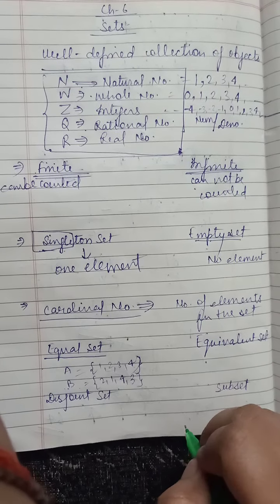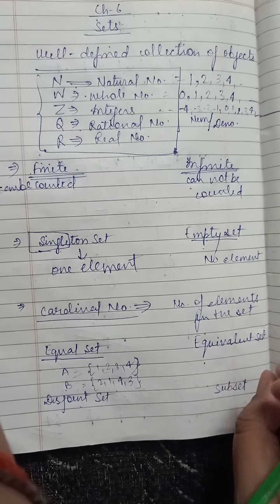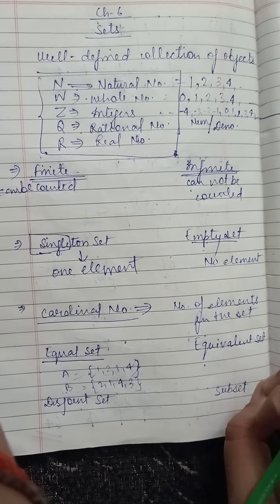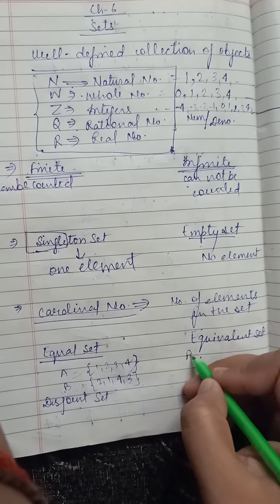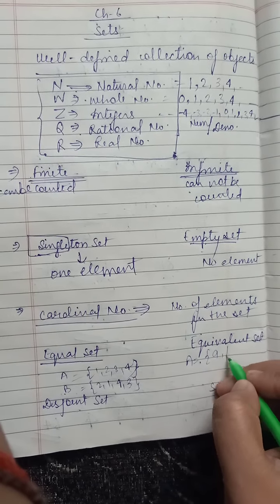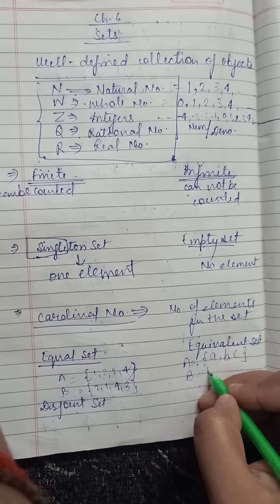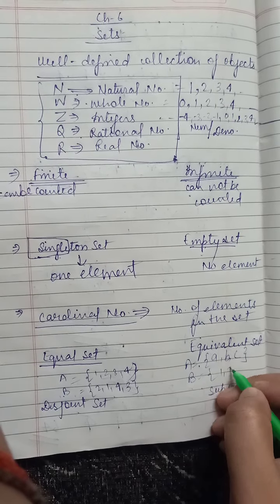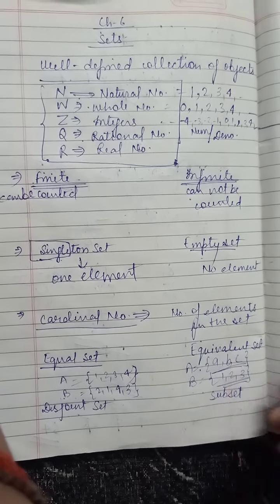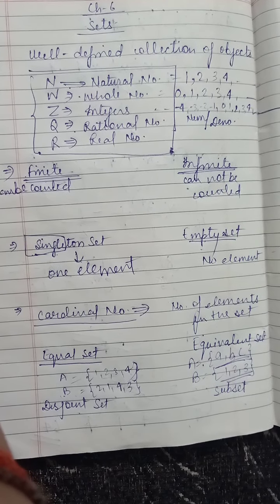Next we have equivalent sets. Equivalent sets have only the same number of elements — meaning the cardinal number is the same. For example, set A = {A, B, C} and set B = {1, 2, 3}. Both sets have three elements, so they are equivalent sets.